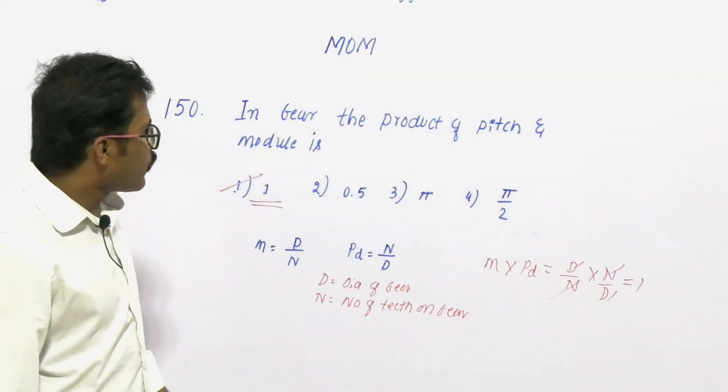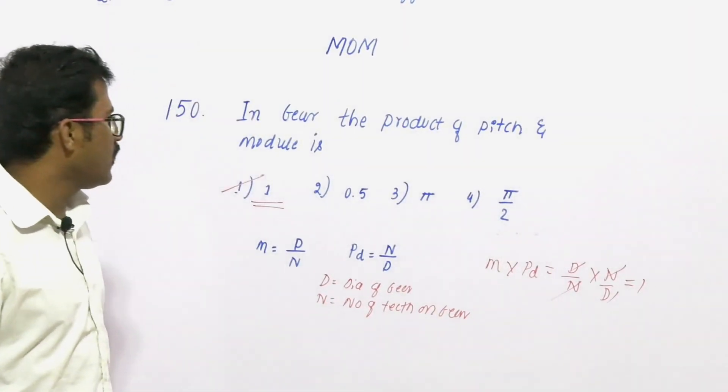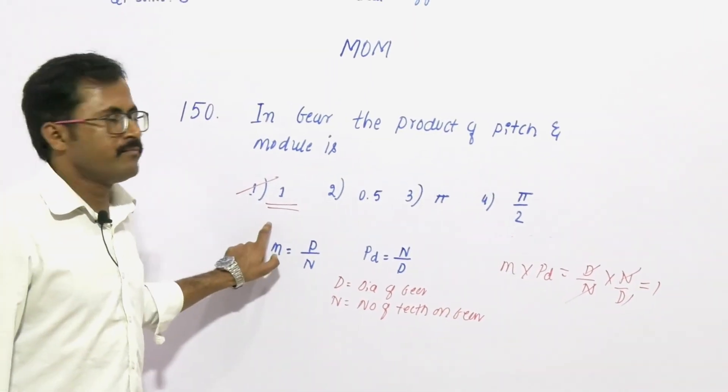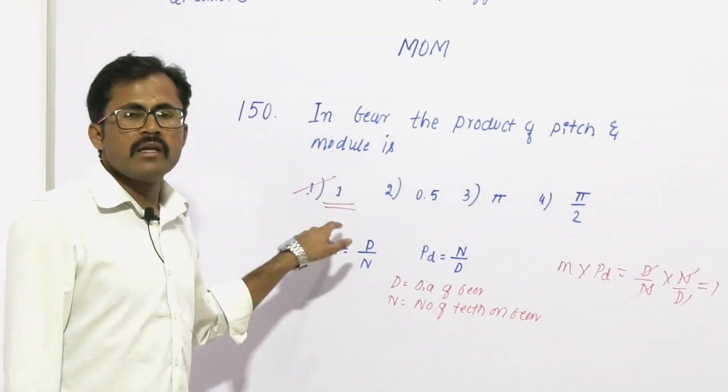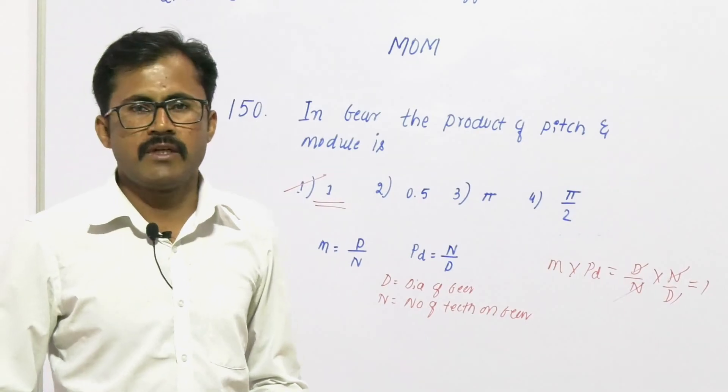So in a gear, the product of diameter pitch and module is 1 — option 1 is the right answer.